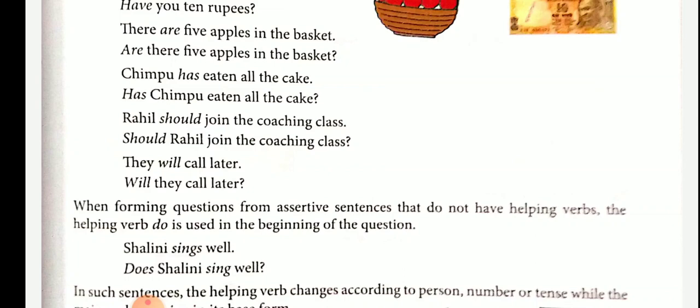The auxiliary verbs used are: is, have, are, has, should, will. When forming questions from assertive sentences that do not have helping verbs, the helping verb 'do' is used at the beginning. Example: Shalini sings well — the verb 'sings' is singular, so: Does Shalini sing well? If the subject is plural, we use 'do.'